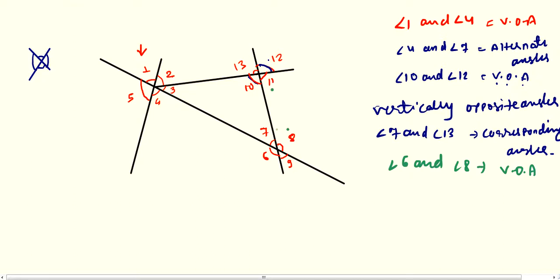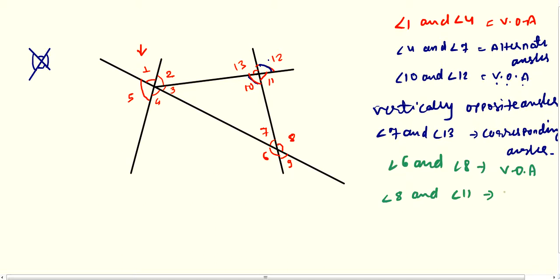This is angle 11 and angle 8. These two angles are on the same side and they are not corresponding angles. For corresponding angles you must have one interior angle and one exterior angle — like angle 7 and angle 13, where angle 7 is interior and angle 13 is exterior. But angle 8 and angle 11 are both interior angles, so angle 8 and angle 11 are co-interior angles.